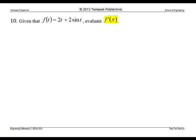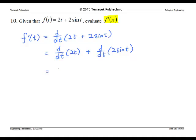First, we differentiate f to get f'. Using linear property, we get, this simplifies to 2 times 1, which is the derivative of t, plus 2 times cosine t.